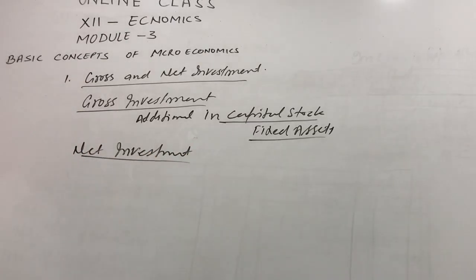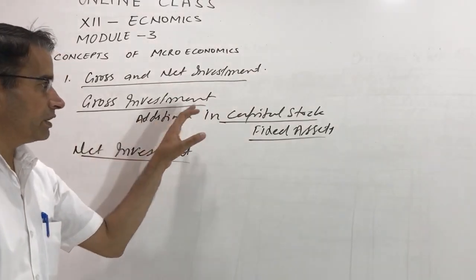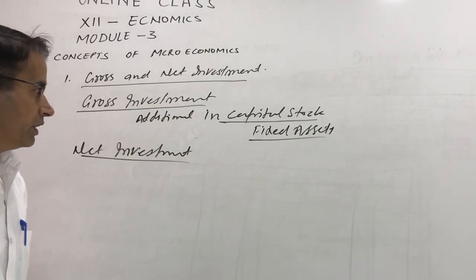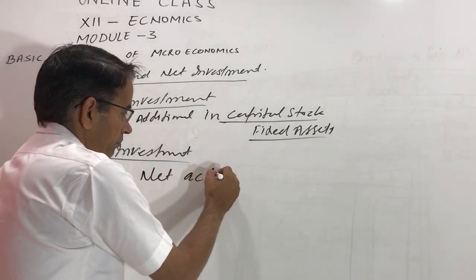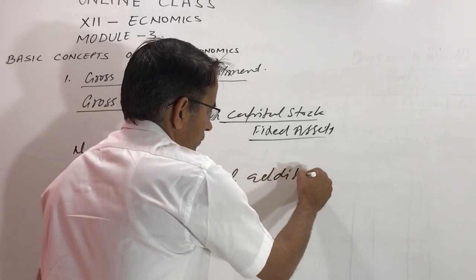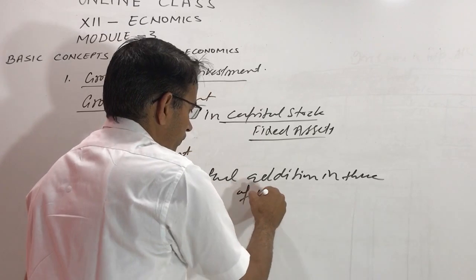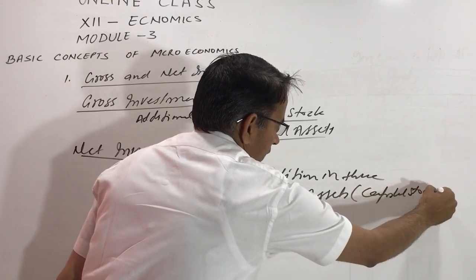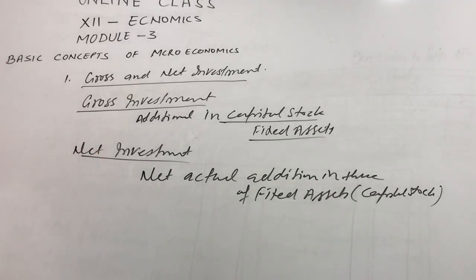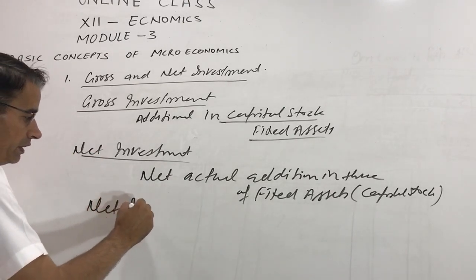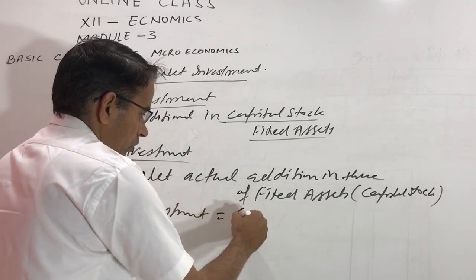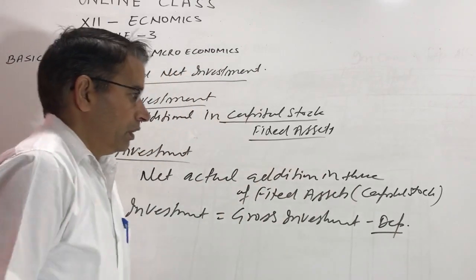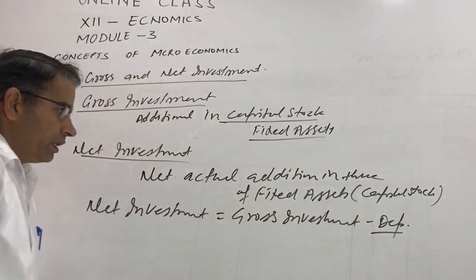Net investment is also the change in the capital stock, but the difference is that here depreciation is excluded from the gross value of investment. It is the actual addition in the value of fixed assets, or capital stock. That net change in the value of capital stock is called net investment. Net investment equals gross investment minus depreciation.